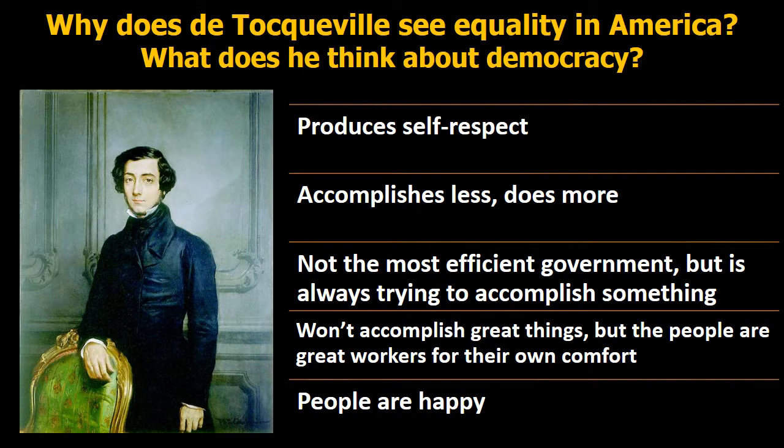French sociologist and political theorist Alexis de Tocqueville traveled to the United States in 1831 to study its prisons, and returned with a wealth of broader observations that he included in his book Democracy in America. As his book revealed, Tocqueville believed that equality was the great political and social idea of his era, and he thought that the United States offered the most advanced example of equality in action.